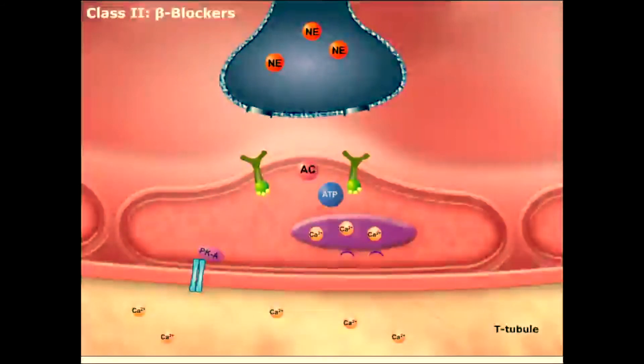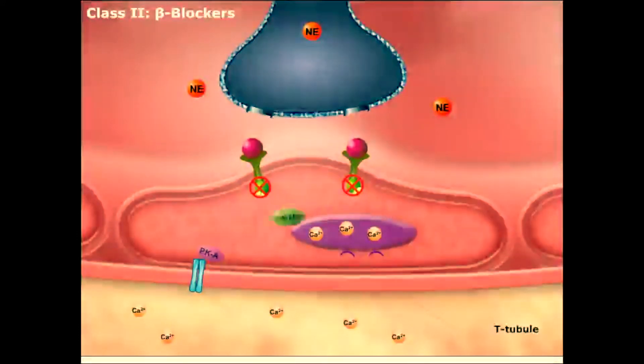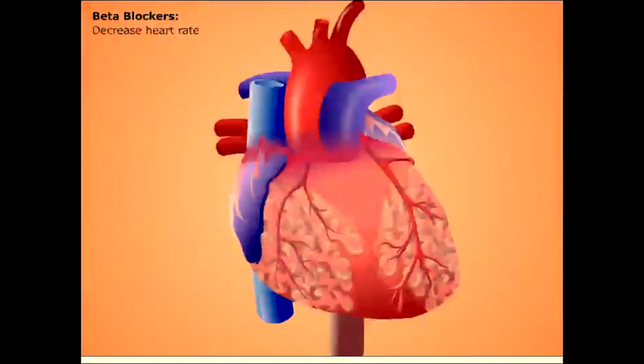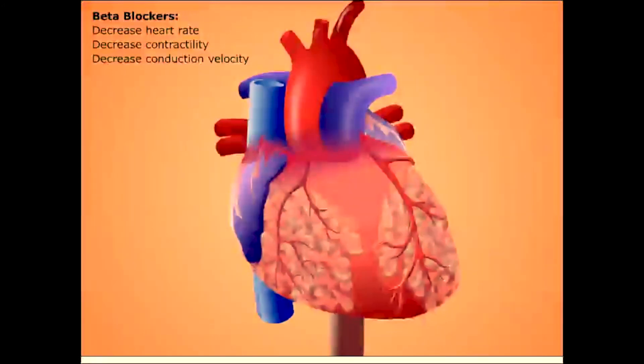Class 2 agents are beta blockers, such as atenolol, propranolol, and metoprolol. They act by binding to beta-1 adrenergic receptors, blocking norepinephrine, and thus inhibiting normal sympathetic activity on the heart. Therefore, beta blockers decrease heart rate, contractility, and conduction velocity. Let's proceed to the next class of antiarrhythmic drugs.